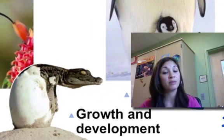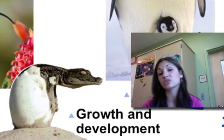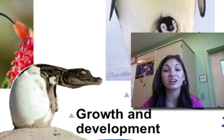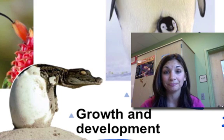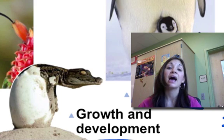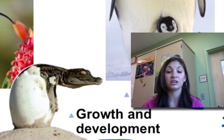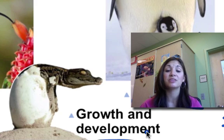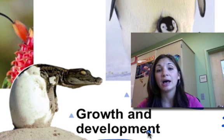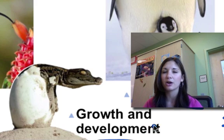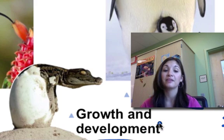Growth and development: all living things go through this process. Living things all start as a single cell, and then growth and development varies for different individuals at different speeds. Remember those R and K selected life histories and lifestyles.